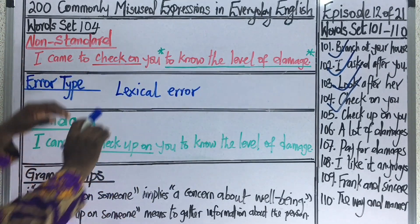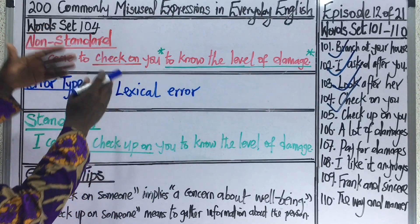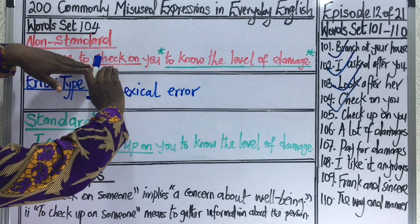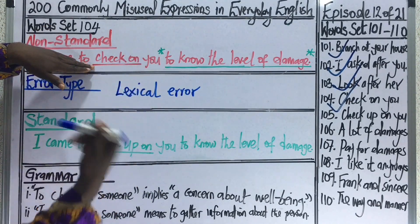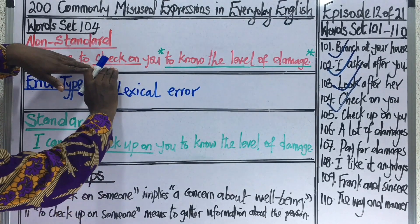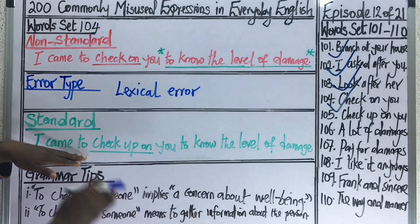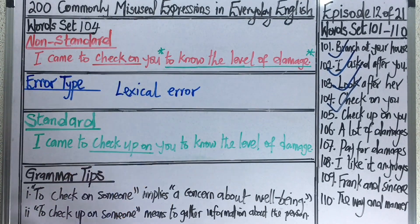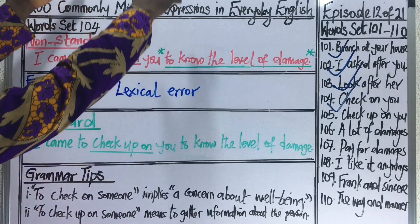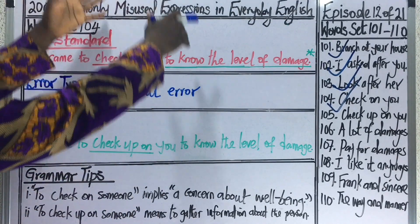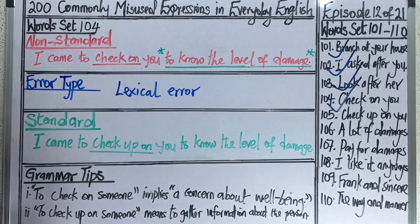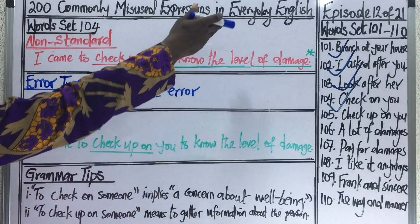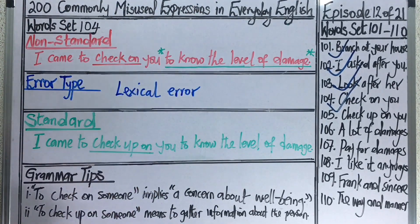When you pay someone a visit to find out about the person's well-being generally, you say you are checking on the person. Take good note of when to use 'check on' and when to use 'check up on.'